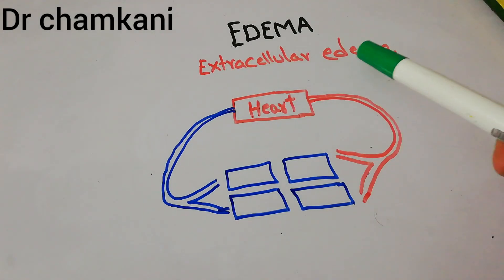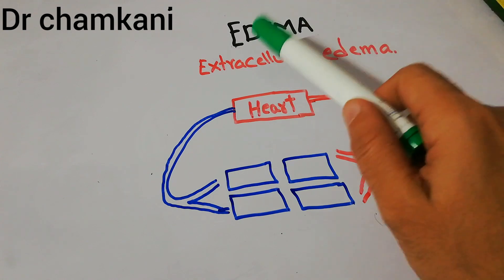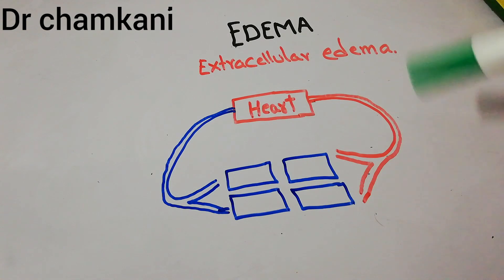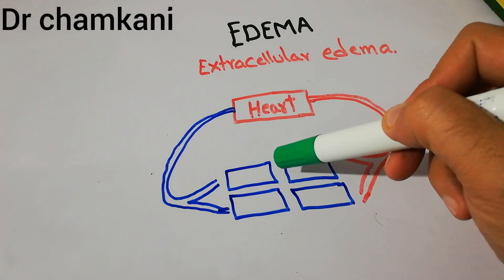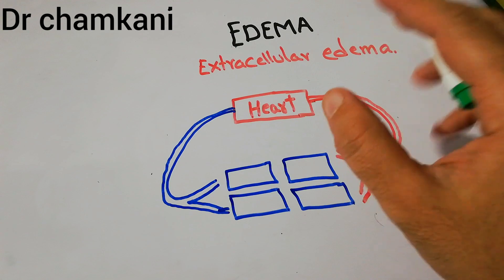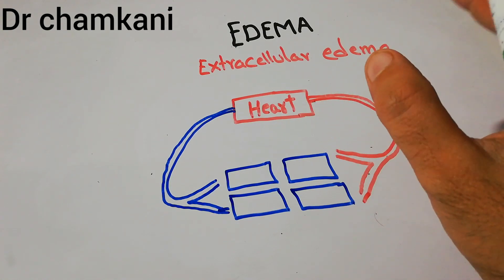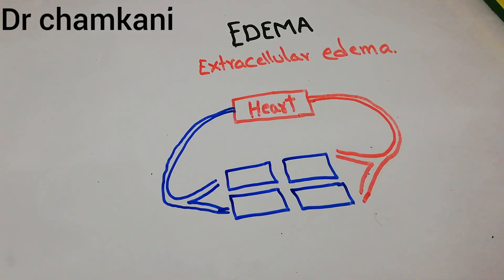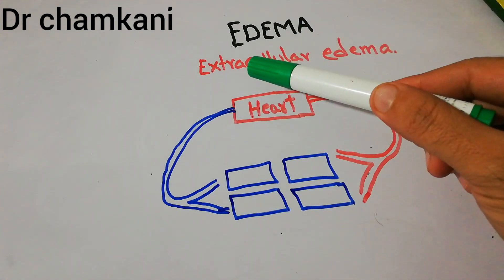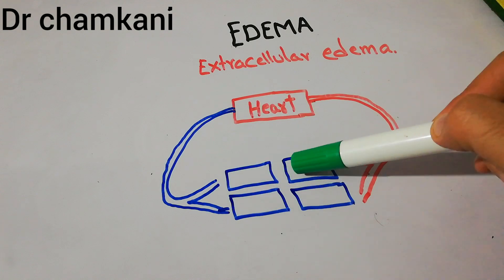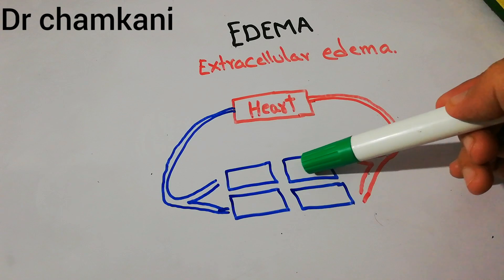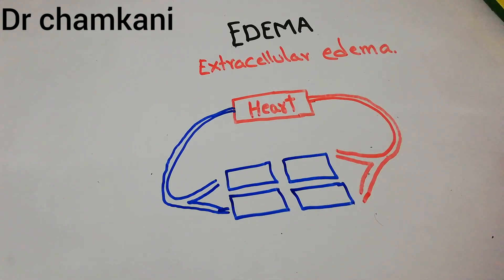In this lecture we will discuss extracellular edema and its causes. In our last lecture we discussed edema and intracellular edema — that edema is basically the accumulation of excess fluid in the intracellular or extracellular spaces. We discussed that intracellular edema, the excess accumulation of fluid inside the cells, was due to depressed metabolism, decreased supply of nutrients to cells, or inflammation.